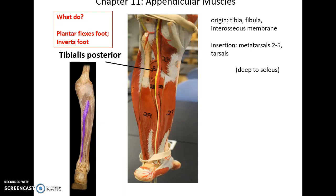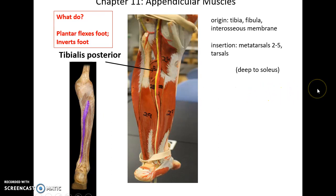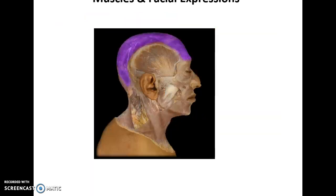Then the tibialis posterior is an extremely deep muscle lying on the posterior of the tibia. Its origin is the tibia, fibula, and interosseous membrane. It inserts into metatarsals 2 through 5 as well as some of the tarsals. It helps to plantar flex the foot and invert the foot.